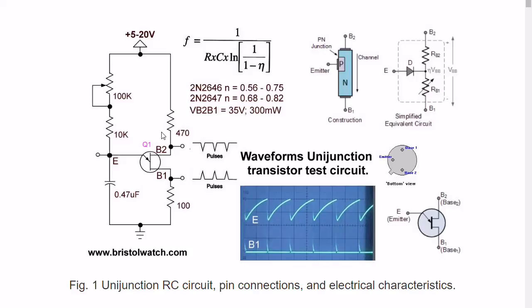On the output, E produces a sawtooth waveform based on the RC time constant of this capacitor and the resistance here. It will operate from 5 to 20 volts. In my test, it probably goes higher.